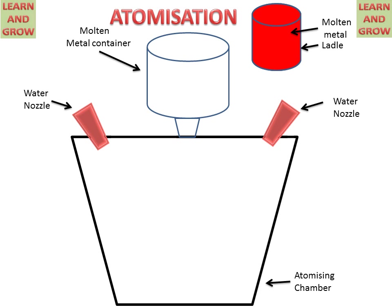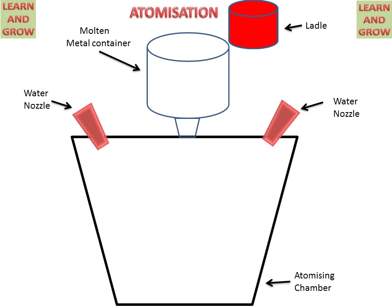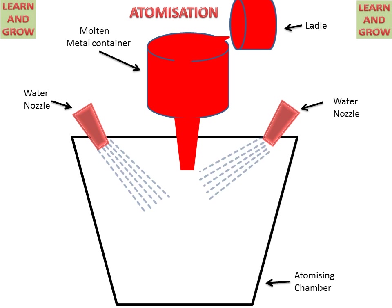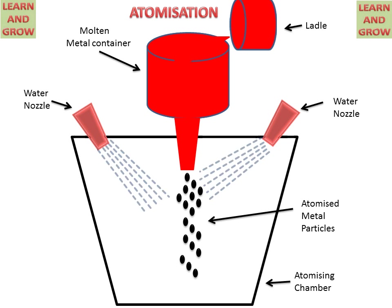Now we see the atomization process. The ladle will give the molten metal to the molten metal container. The molten metal container will supply it to the atomizing chamber through a nozzle. And the water nozzles supply water to the molten metal. By the supplying of water to the molten metal, the molten metal will be converted into powder form particles. This is called atomizing, or atomized metal particles.